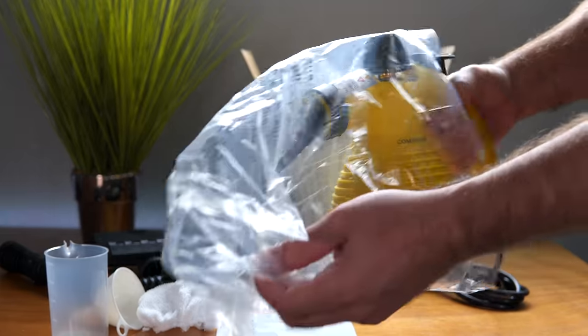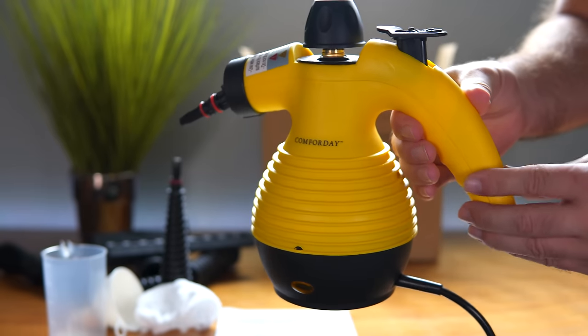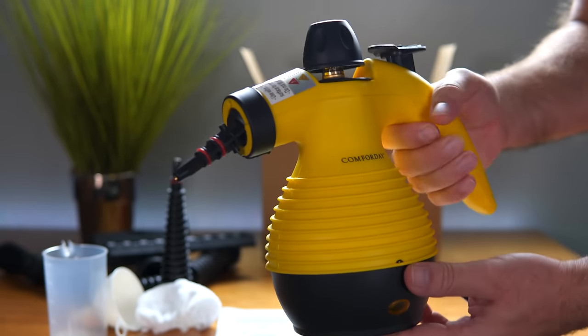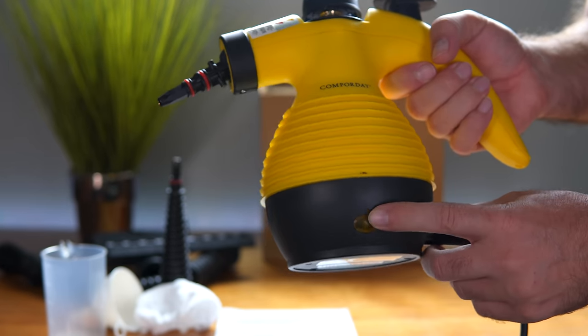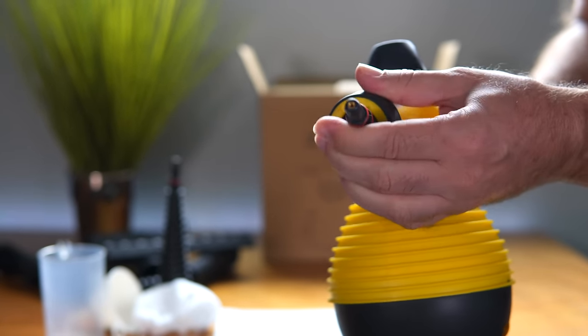This is the main part here. It comes with a pretty long cord, looks to be about eight feet or so. Here we have a nice handle to grip on. On the bottom we have a light, and the front here is where our connectors will go. This actually moves around in there a bit.